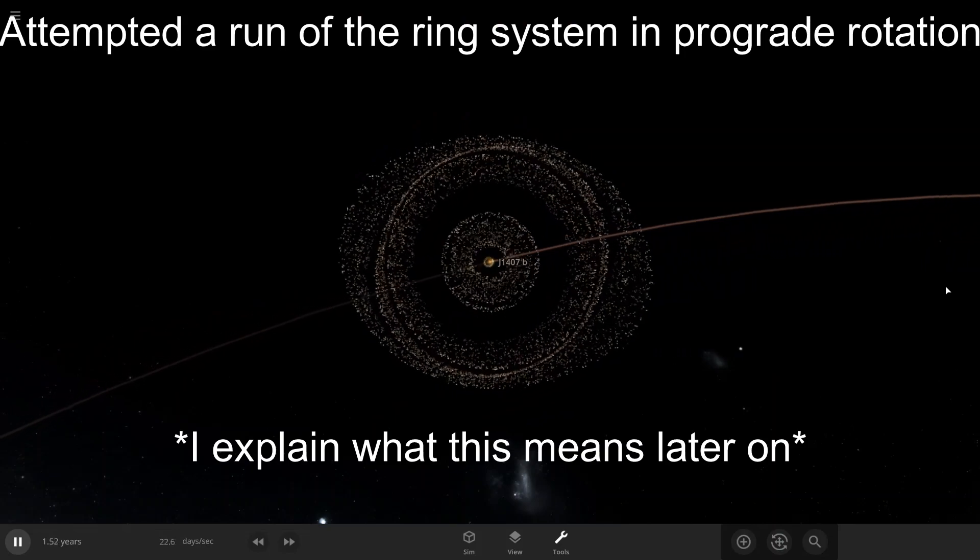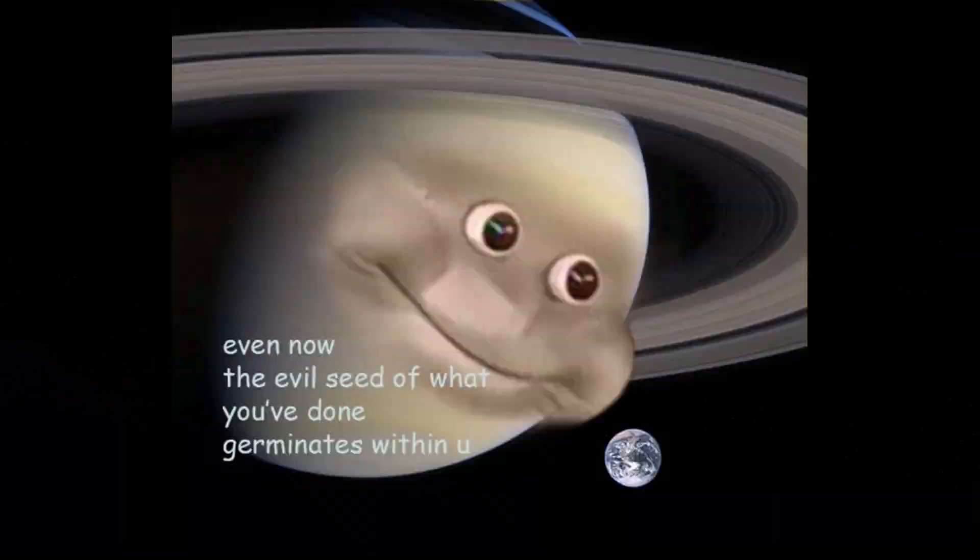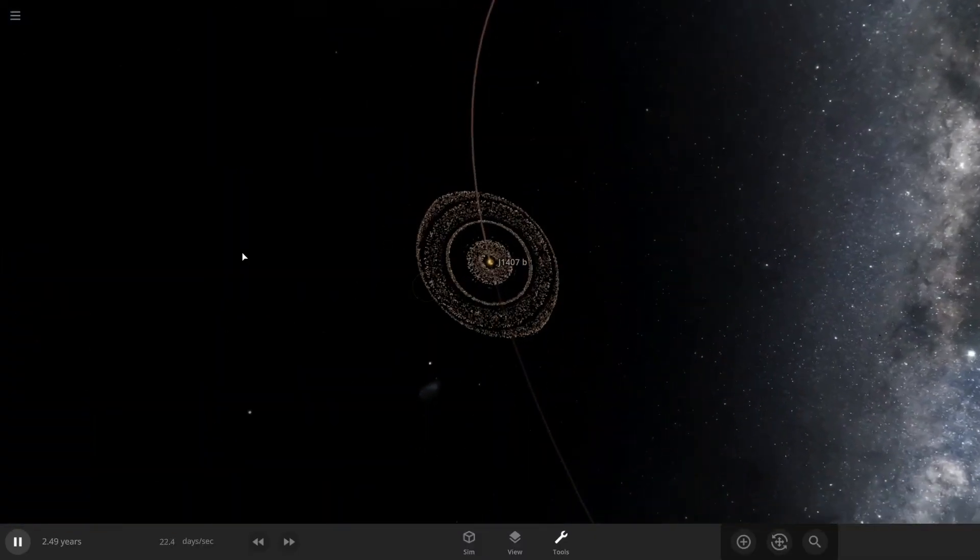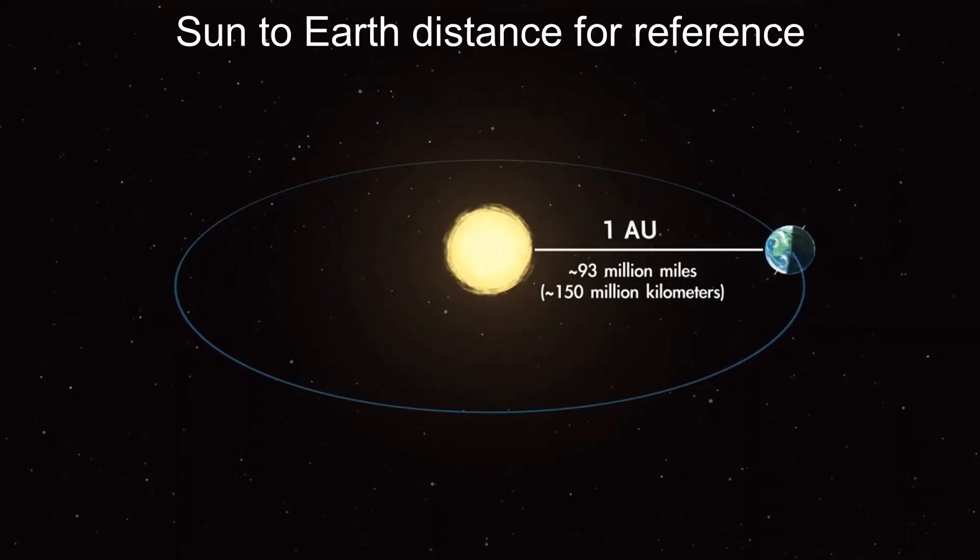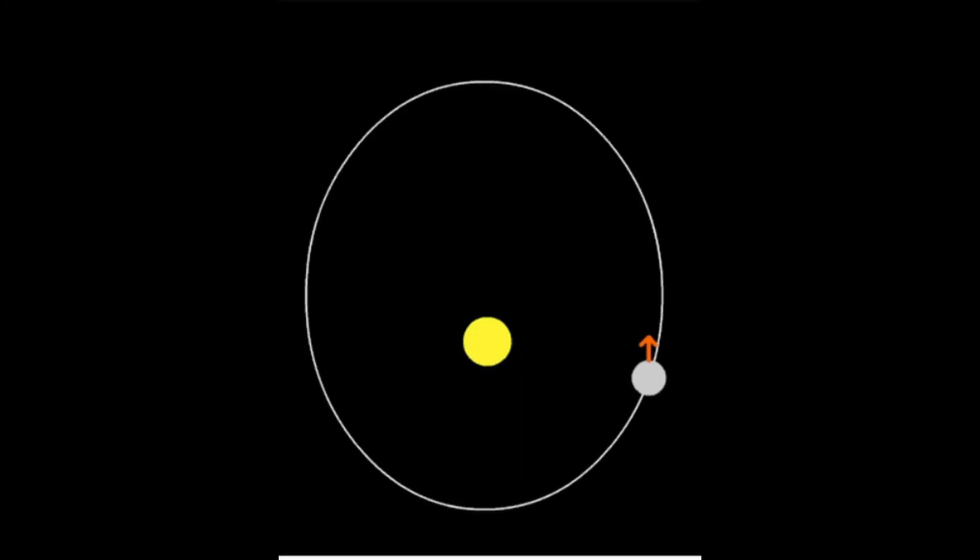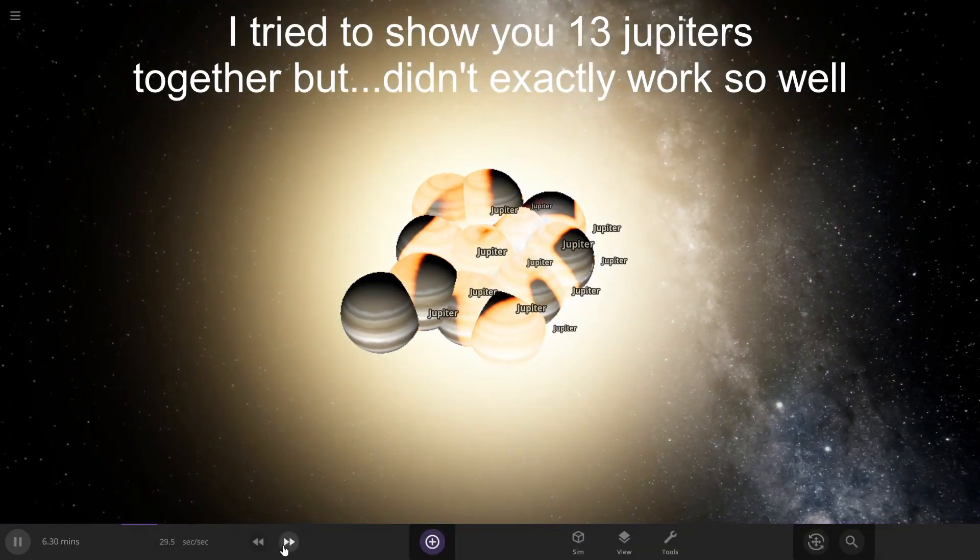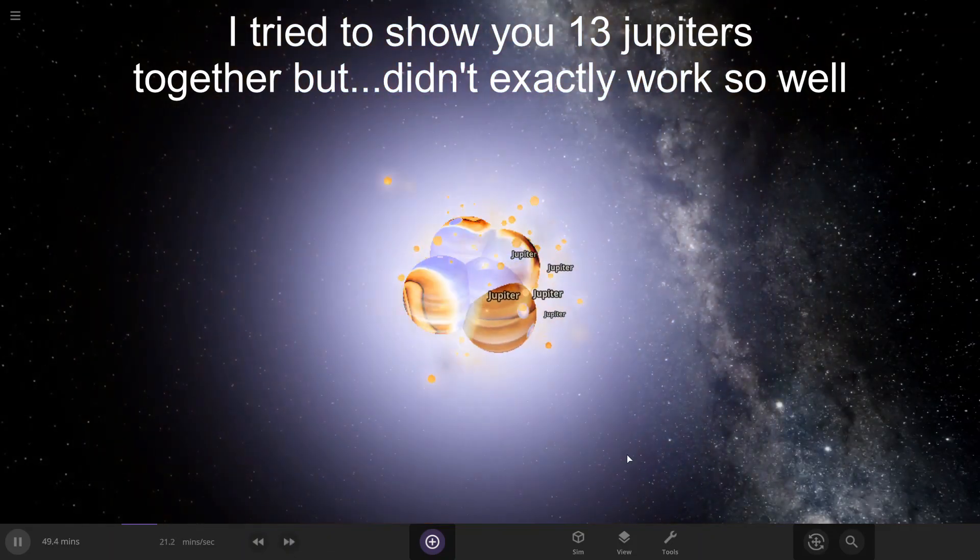J1407b has also been referred to as Saturn on steroids due to the sheer substantiality of its nominal and almost unreal circumplanetary rings with a radius of approximately 19 million kilometers. The orbital period of this exoplanet is estimated to be around a decade, and its most probable mass is approximately 13 to 26 Jupiter masses, but with considerable uncertainty.